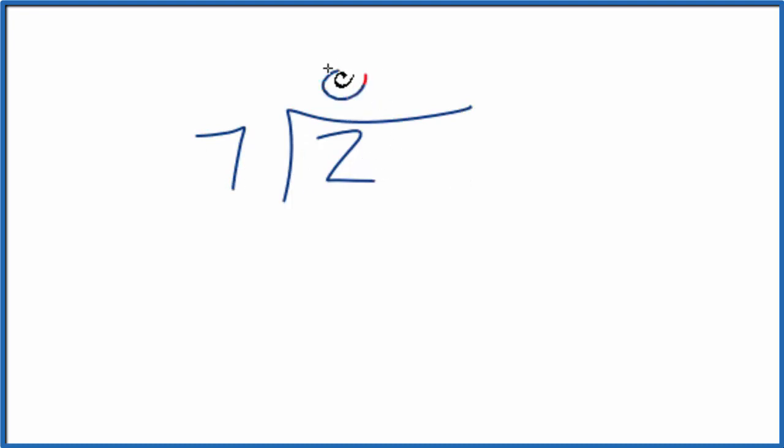7 doesn't go into 2, so let's put 0 point here and make this 20. 2 times 7, that's 14. Subtract, we get 6. So let's make this 60.